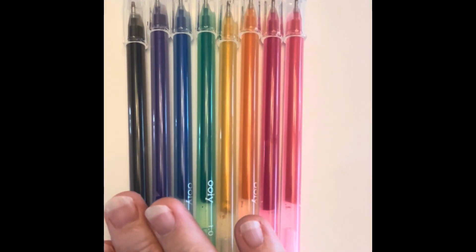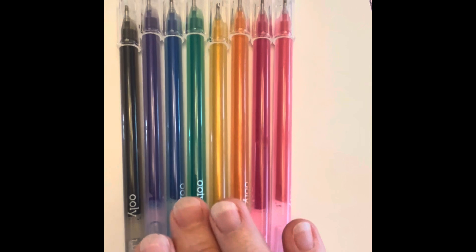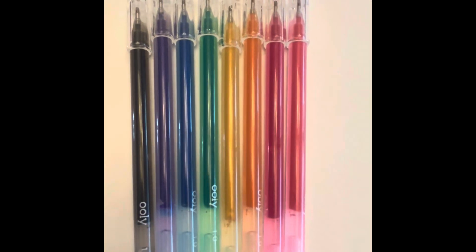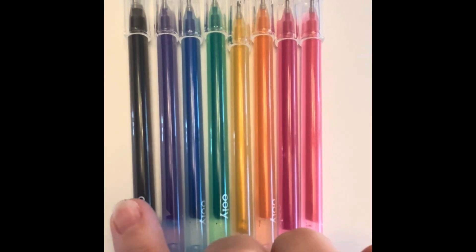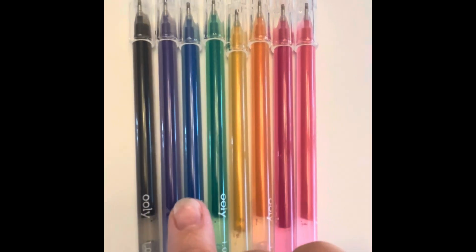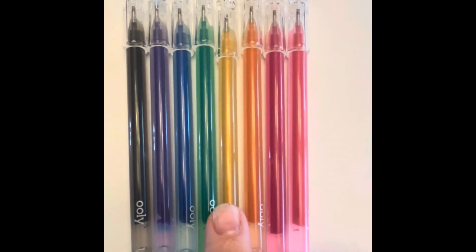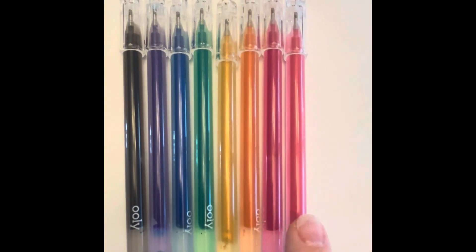And these are the Ooly Radiant Writers and you can see the name of the pen on the pen. These are glitter pens and we have black, purple, blue, green, gold, orange, pink, and red.